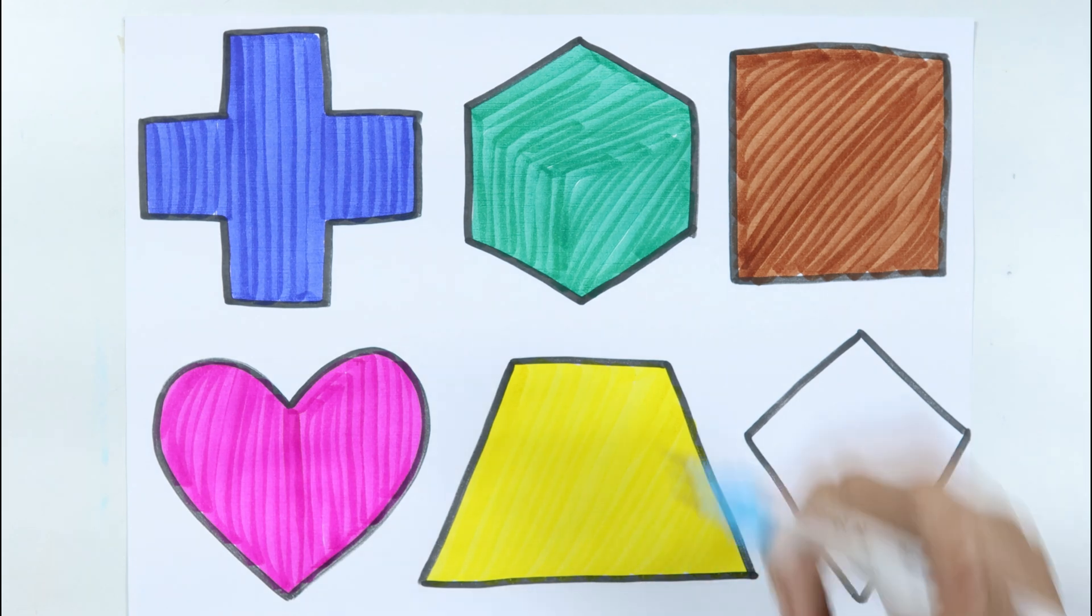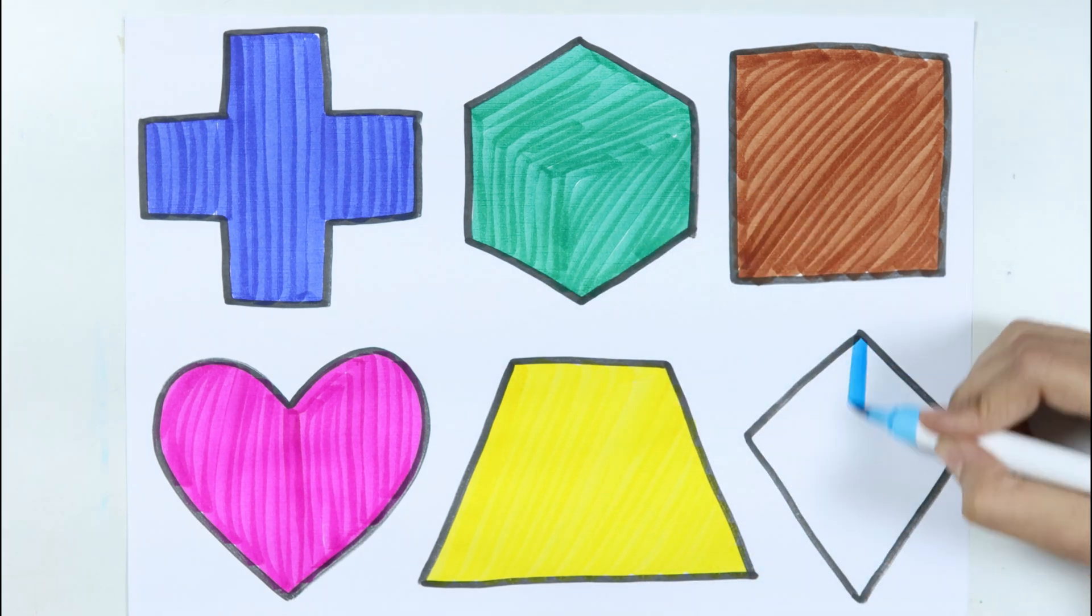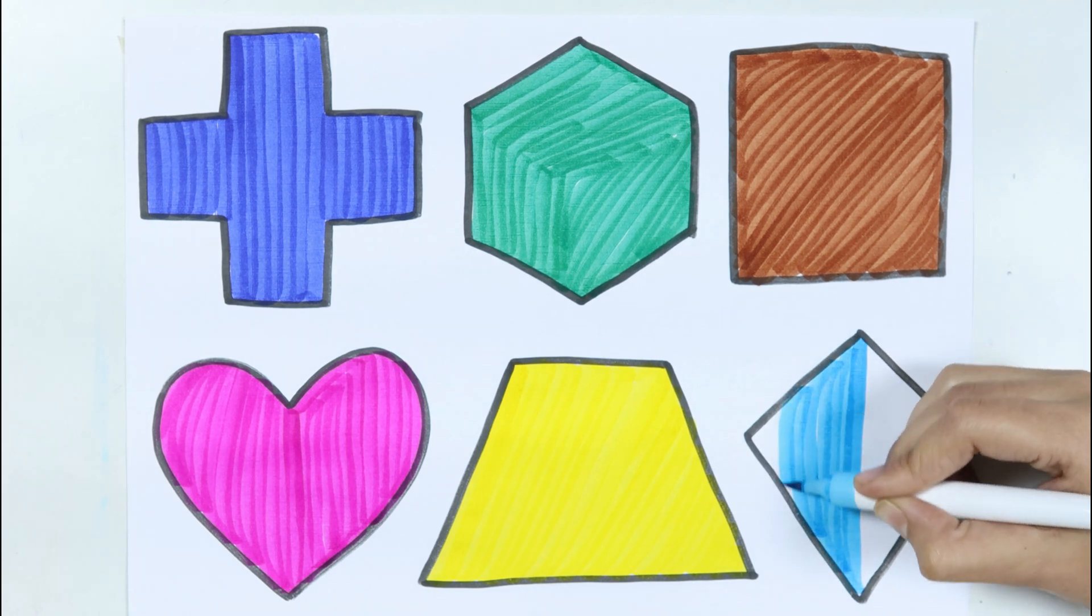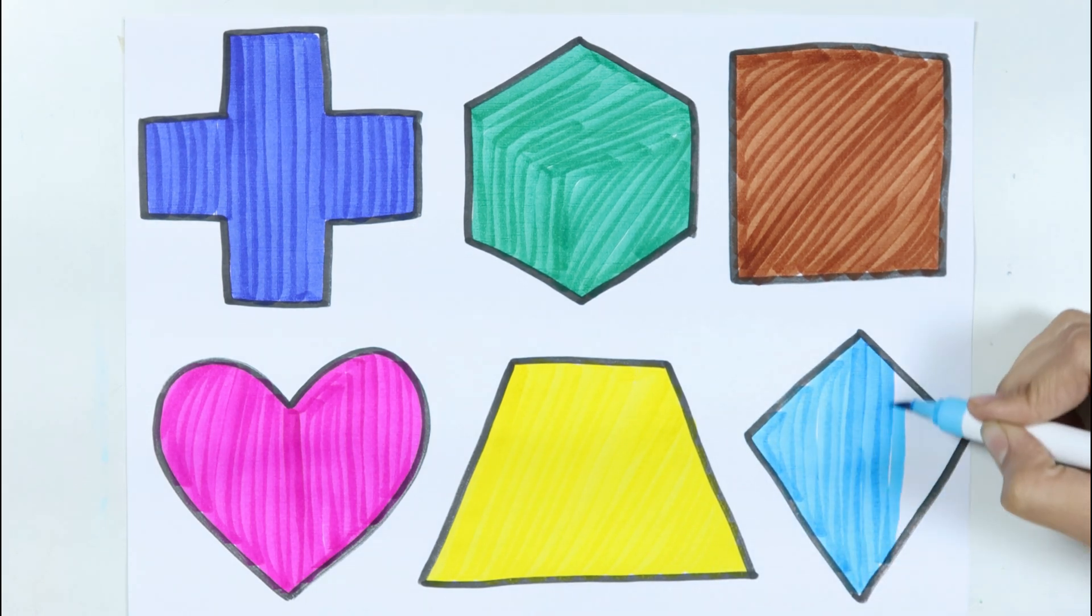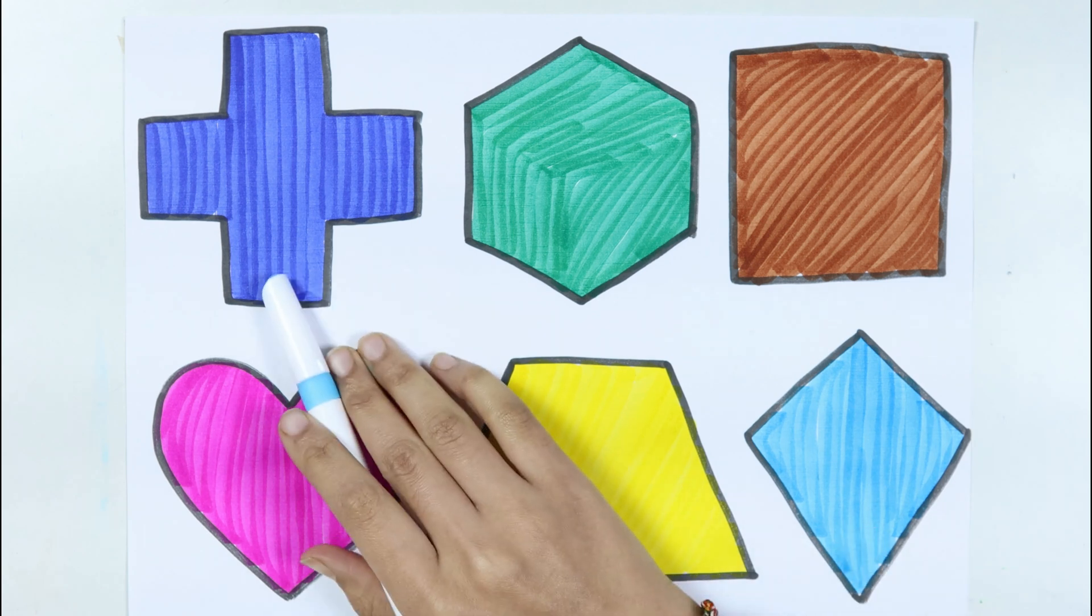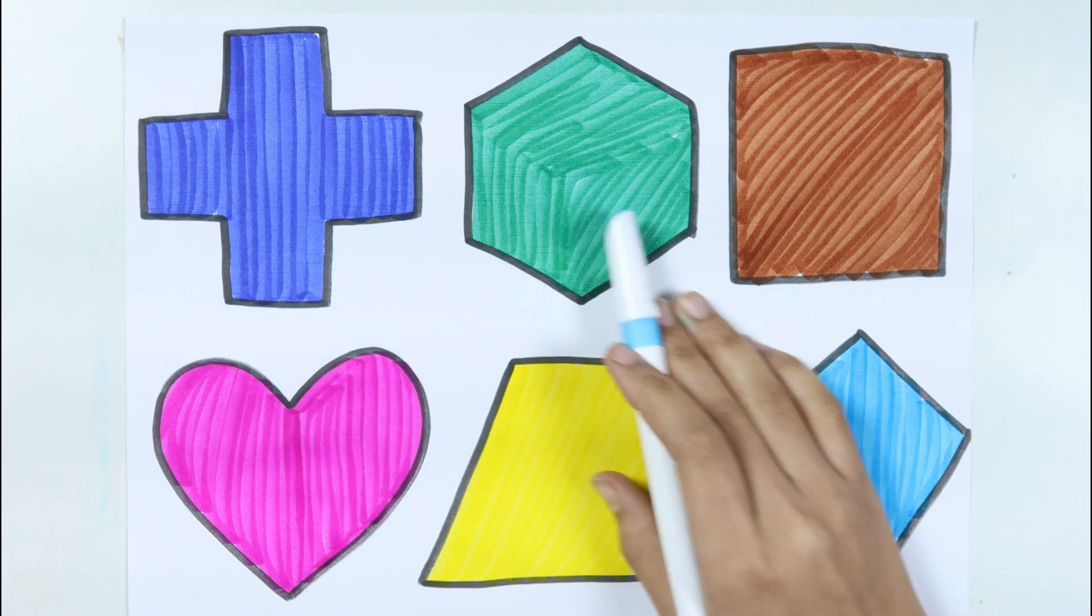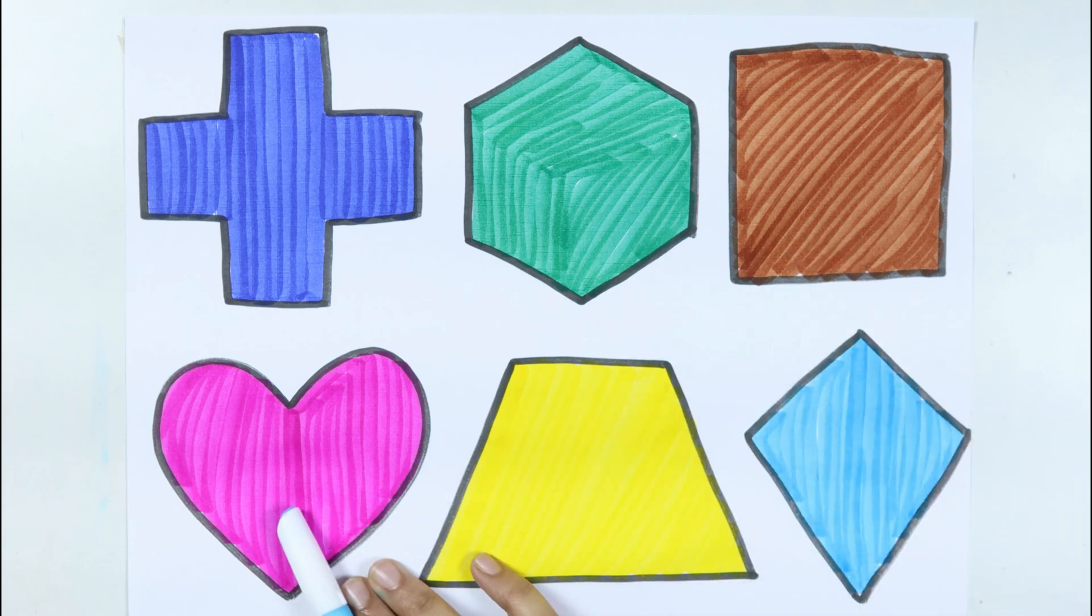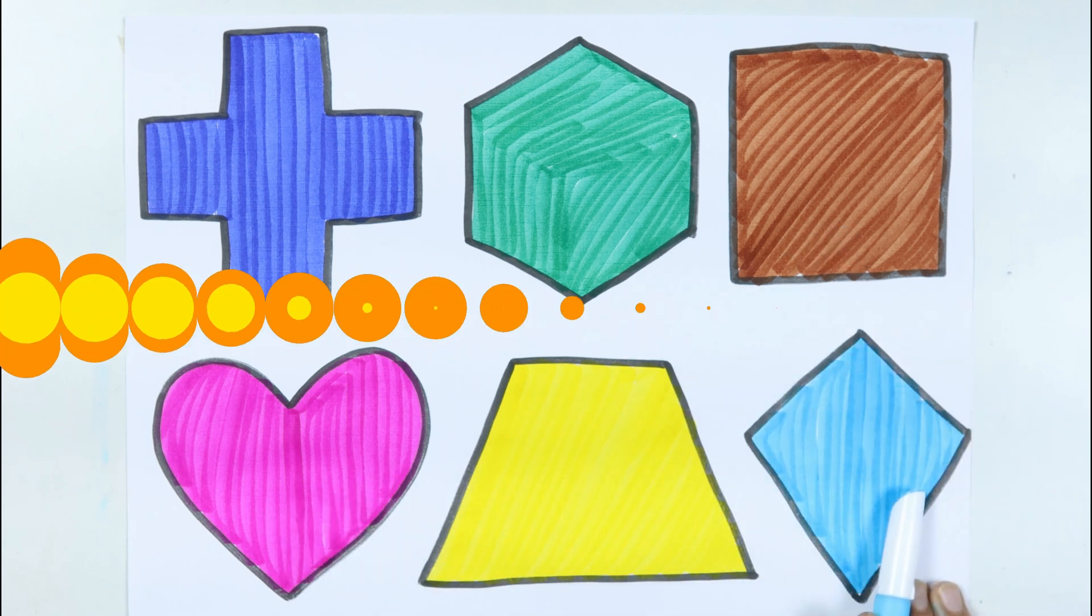Trapezoid! Sky blue color! Up above the world so high, like a diamond in the sky! Cross! Hexagon! Square! Heart! Trapezoid! Kite!